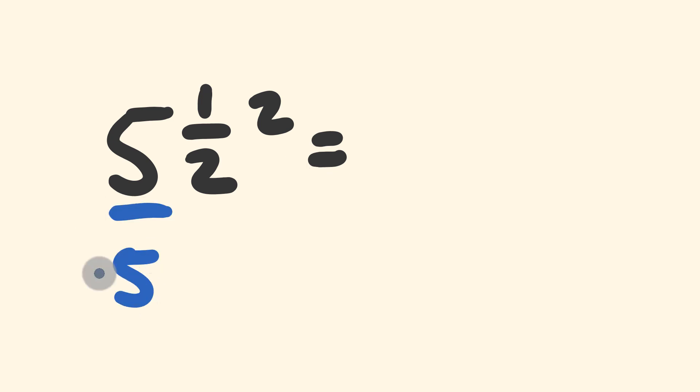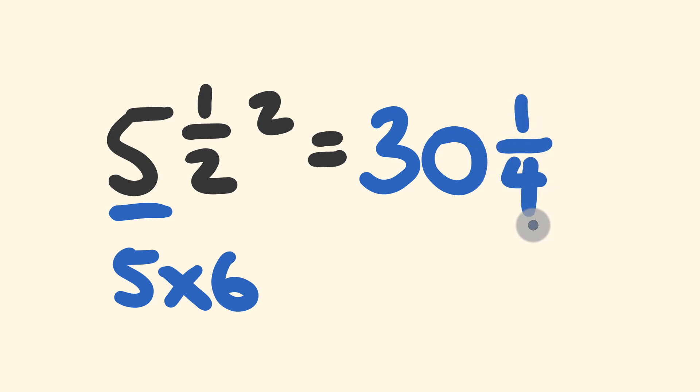We have 5, and the next number up is 6. 5 times 6 is equal to 30, and final part of the answer, we have a quarter. There you go. Five and a half squared is 30 and a quarter.